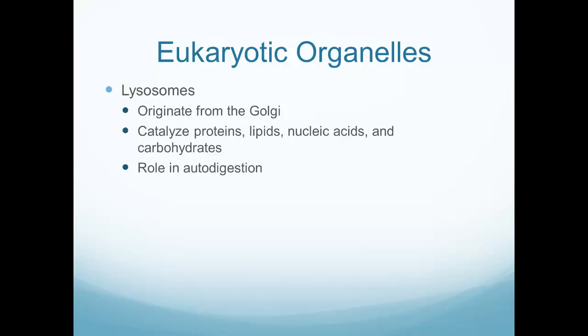Lysosomes originate from the Golgi and are the digestion part of the cell — like the cell's digestive system. They catabolize proteins, lipids, nucleic acids, and carbohydrates, and have a role in the autodigestion of the cell. If a lysosome is destroyed — for example, from lack of energy — it releases its enzymes into the cell, and those enzymes start digesting that cell. This is one thing that can happen when a patient isn't getting enough blood flow or oxygen, causing permanent cellular damage.